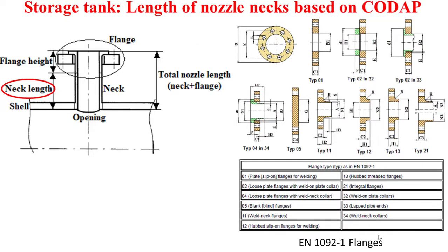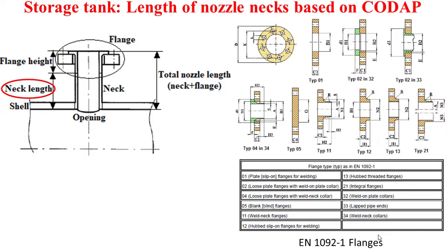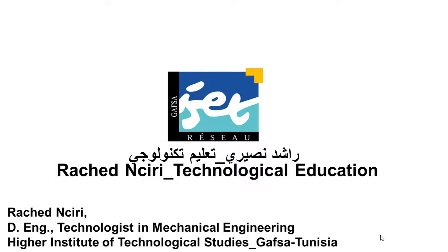The flange height is obtained using standard dimensions of flanges. For example, the European standard EN 1092-1 presents several types of flanges with a height for each type. For type 0.4 the flange height is H2, and for type 0.1 the flange height is C1. A table extracted from EN 1092-1 presents specific dimensions for several flange types. Thank you for your attention, and if you have any remarks, please mention them in the comments.